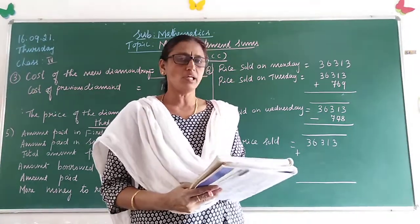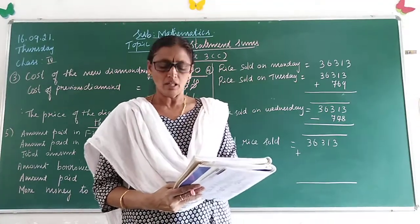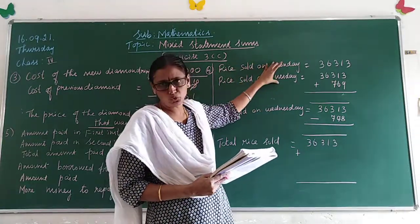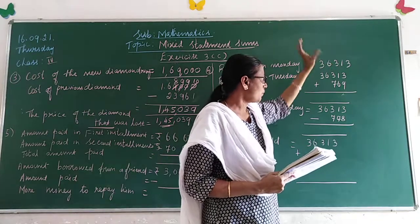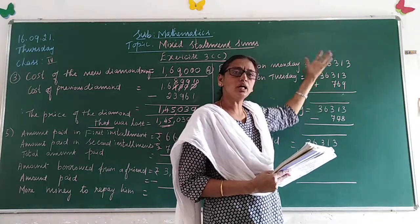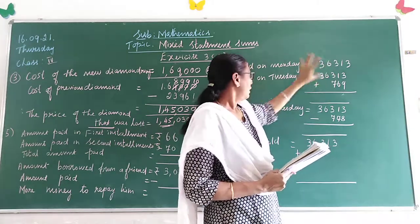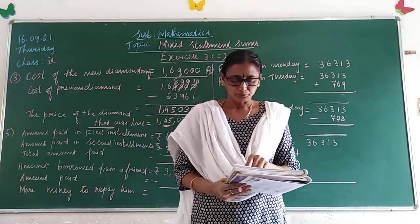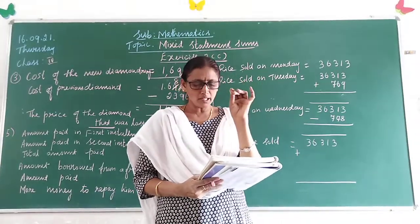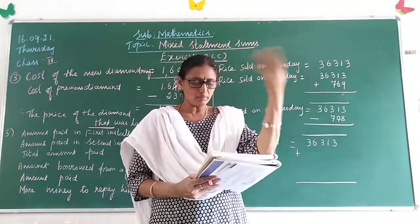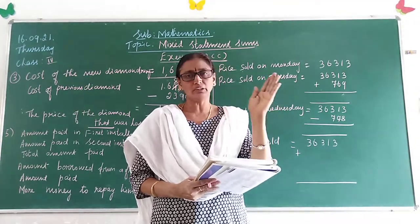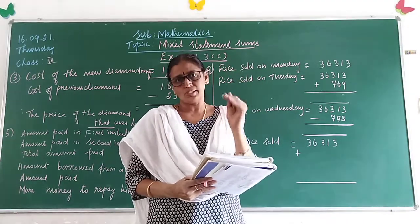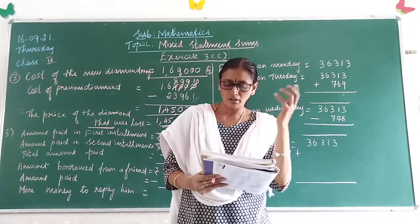On Tuesday, how much rice is more? He sold 769 kg more than on Monday. So rice sold on Tuesday = rice sold on Monday plus 769 kg. That is Step 1. For Step 2, on Wednesday he sold 36,313 kg on Monday but 778 kg less on Wednesday. So rice sold on Wednesday = Monday's amount minus 778 kg.